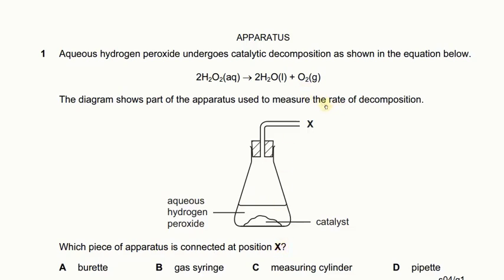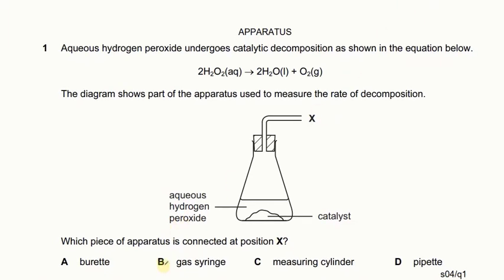We are going to find the rate of this reaction and there is a gas being formed — oxygen gas is being formed. So we need an apparatus over here that can collect that gas. The gas can be collected with the help of a gas syringe. So the answer is B.